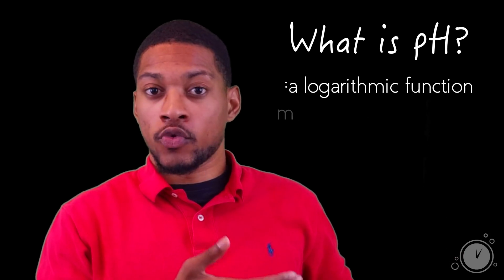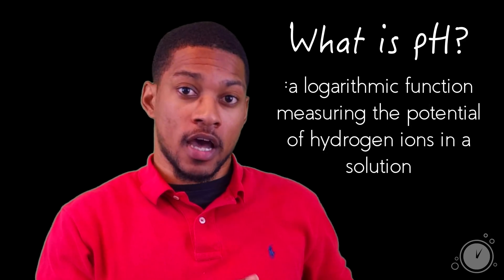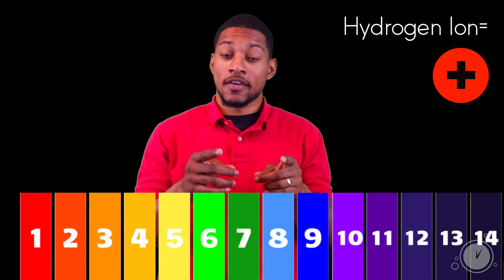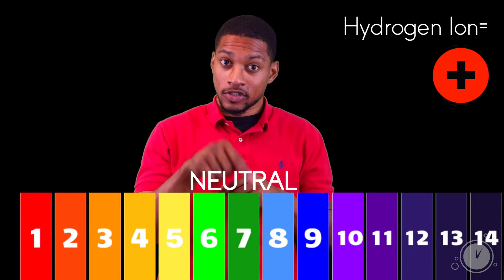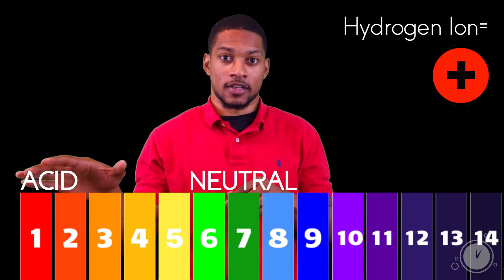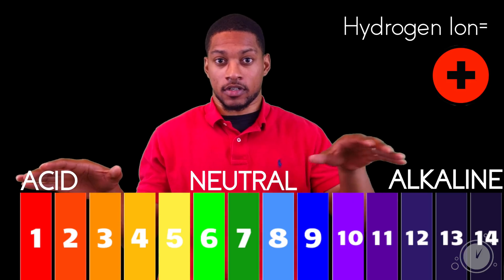pH is a logarithmic function measuring the potential of hydrogen ions in a solution. Let's bring back my friend H-plus that we learned about in the 'What is Hydrogen' episode. Now the pH scale goes from 1 to 14. Seven is neutral, anything below 7 is acidic, and anything above 7 is alkaline.